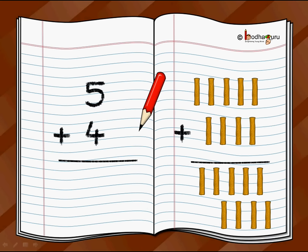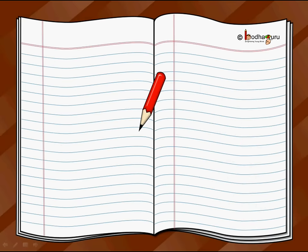Let's put all five sticks down here and four more sticks. So now we have a total of one, two, three, four, five, six, seven, eight, nine — we have a total of nine sticks. We can write this as five plus four is equal to nine.